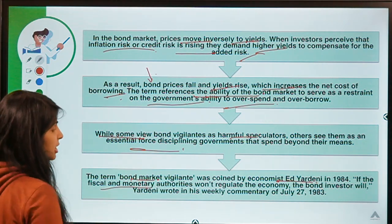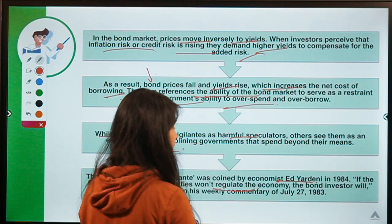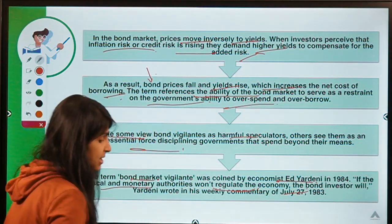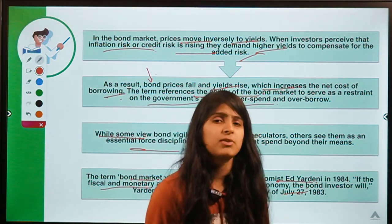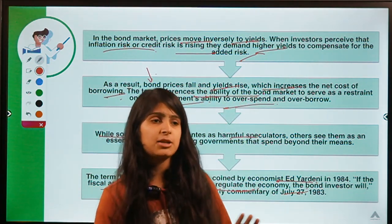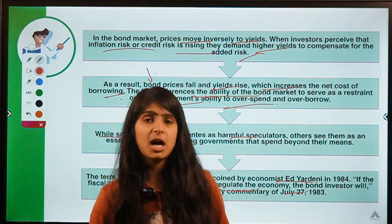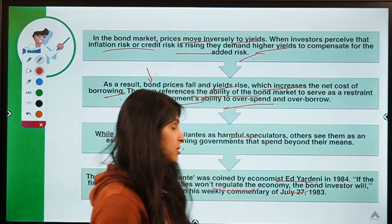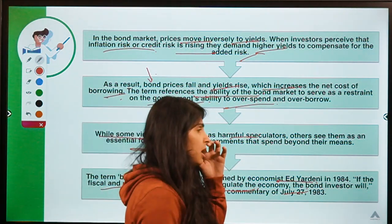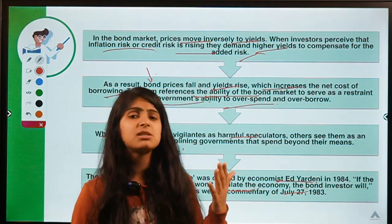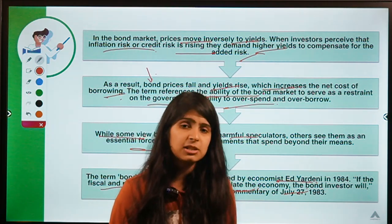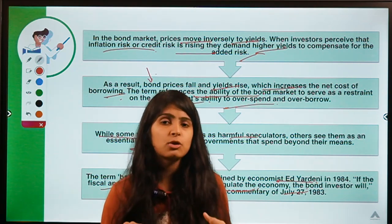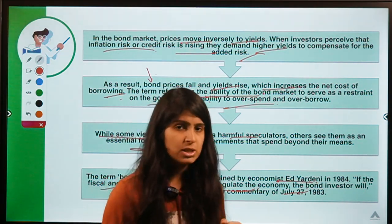The term 'bond market vigilante' was coined by economist Ed Yardeni in 1984. He stated: 'If the fiscal and monetary authorities won't regulate the economy, the bond investor will.' If central banks are not raising the confidence of investors, investors feel it is their job to regulate the economy. Central banks must therefore try to incorporate trust and confidence within such investors.